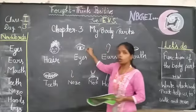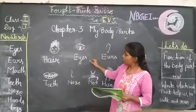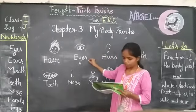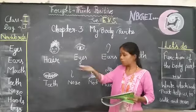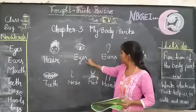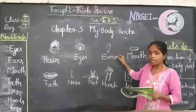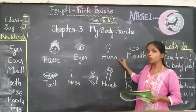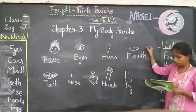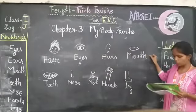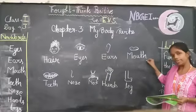And this is your eyes. Eyes help us to see things around us. And ears help us to hear. Mouth helps us to speak.